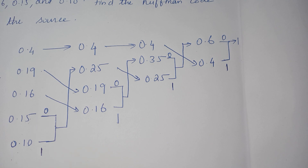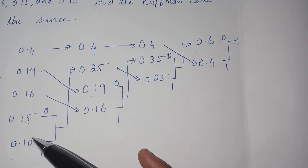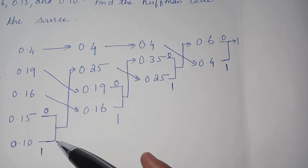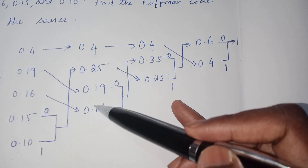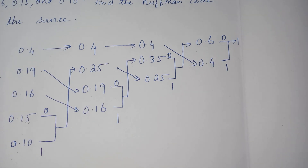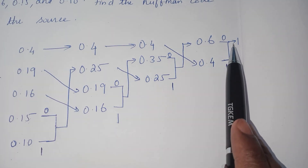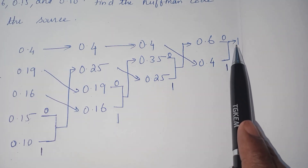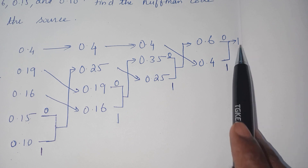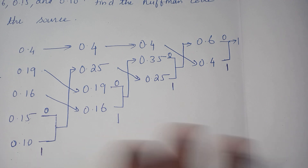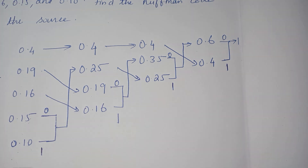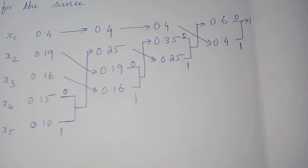To summarize what we've done: we arranged symbols in descending order, added the least two probabilities, rearranged in descending order, and repeated until the sum of probabilities reached one. Now the most important step is how to write the code word for each symbol.